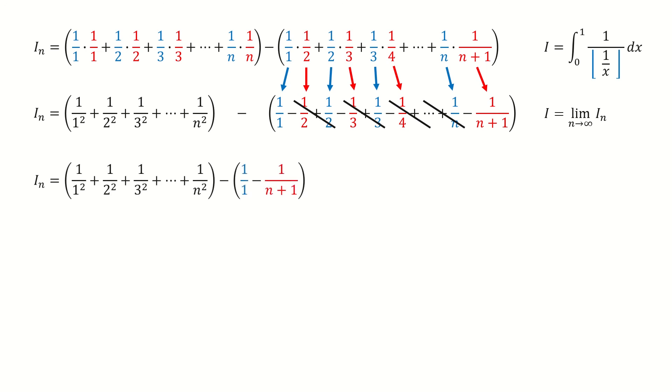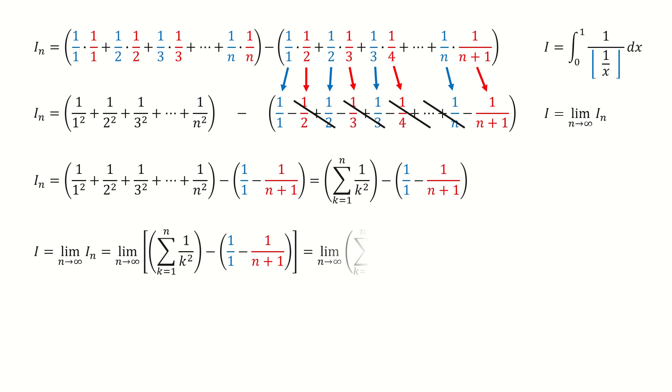And then we write the first term into a compact form. Now we take the limit. And then we split it into two limits. And this term vanishes after taking the limit.